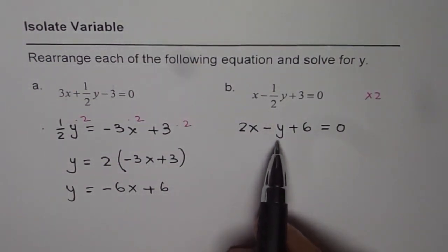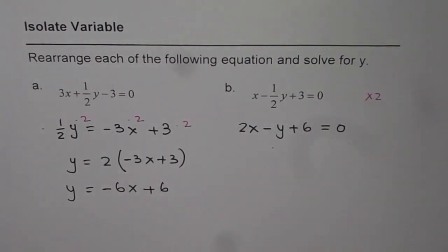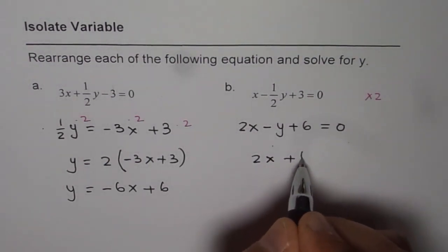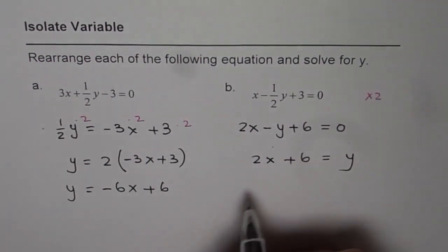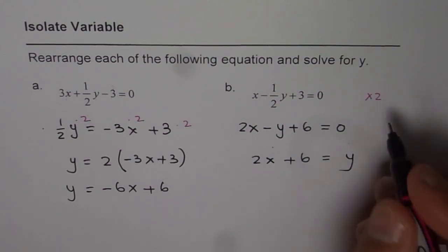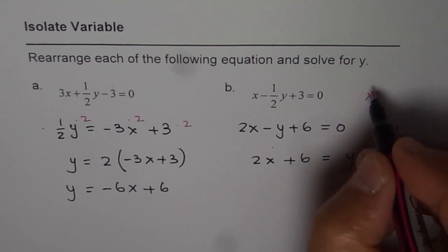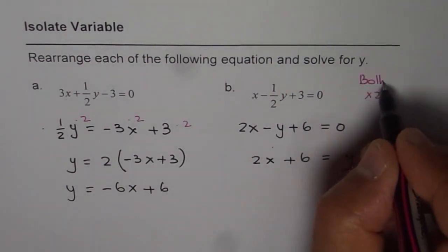Since we have to isolate y, we can add y on both sides. So we get 2x plus 6 equals to y. So this step is add y on both sides. So whatever we do here, we do it on both sides. Remember that.